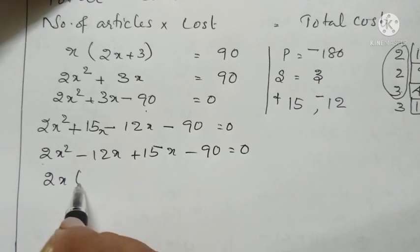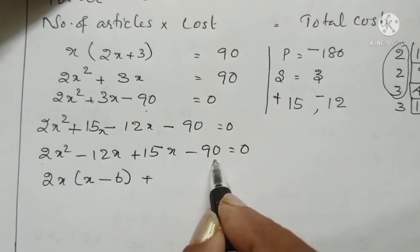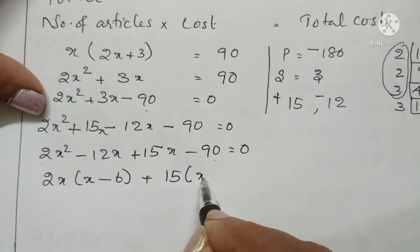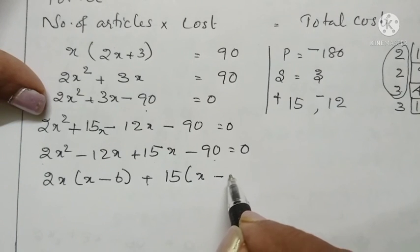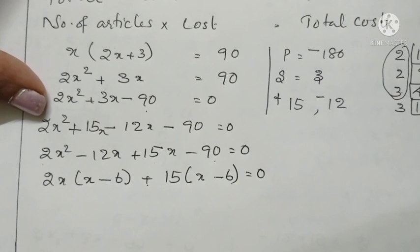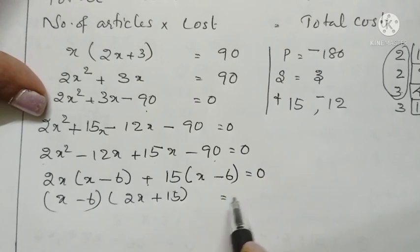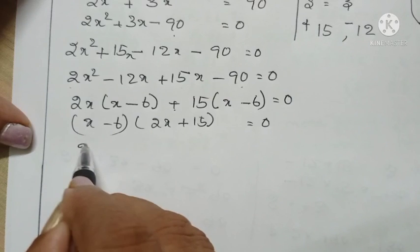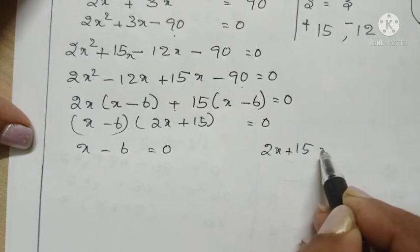Taking common factor 2x from the first two terms gives 2x(x minus 6). Taking common factor 15 from the last two terms gives 15(x minus 6). Therefore, x minus 6 is common, giving us (x minus 6)(2x plus 15) equals 0. Either x minus 6 equals 0, or 2x plus 15 equals 0.